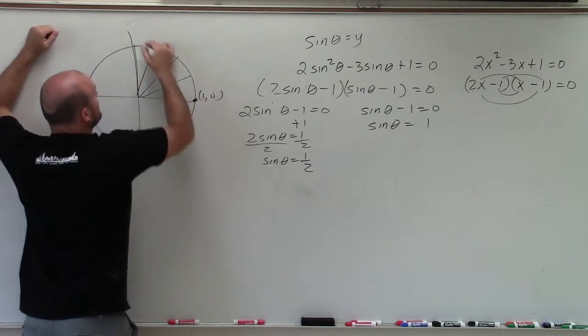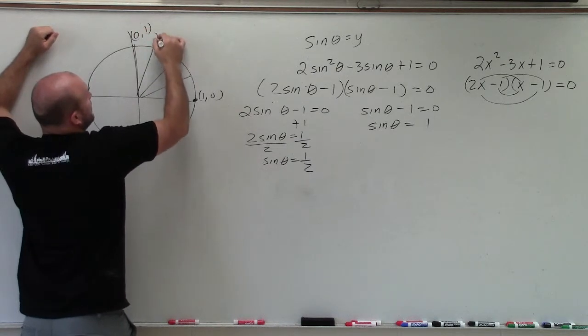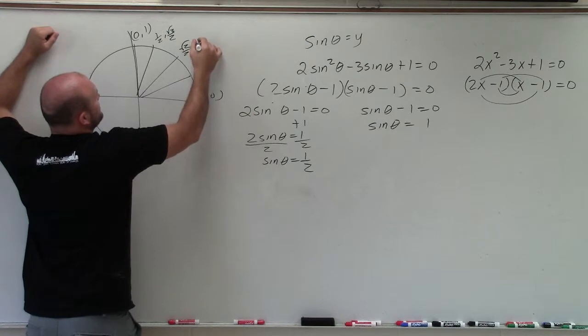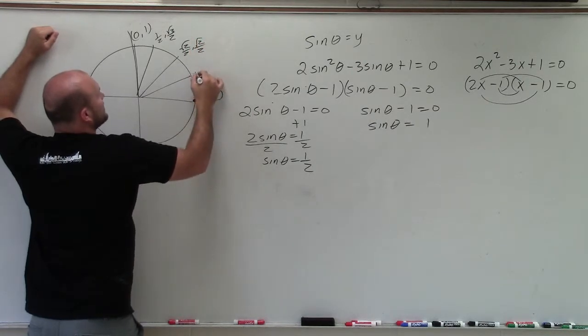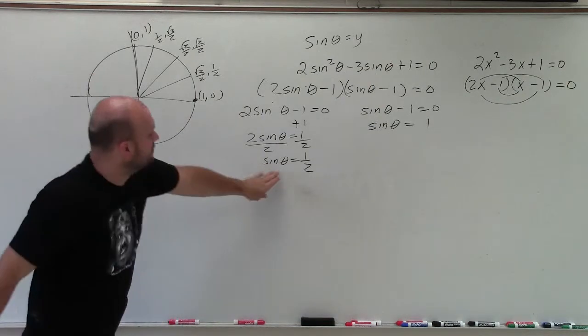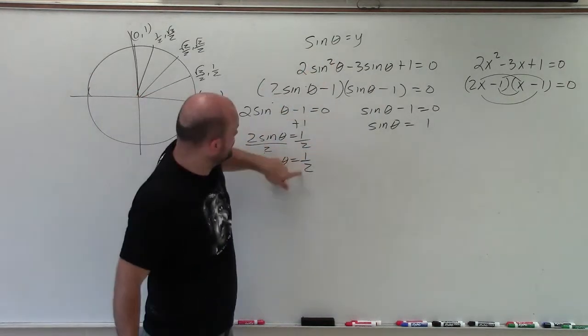So this is 1 comma 0, 0 comma 1, 1 half comma square root of 3 over 2, square root of 2 over 2 comma square root of 2 over 2, and square root of 3 over 2 comma 1 half. So when is the y-coordinate equal to 1 half?